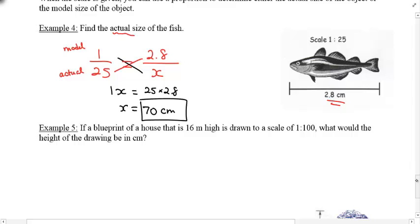All right. Why don't you try the next one here? If the blueprint of a house that is 16 meters high is drawn to a scale of 1 to 100, scale of 1 to 100. Model on the top, actual on the bottom. What would be the height of the drawing? So height of the drawing means I want the height of the model. And what would the actual number be? That's the 16 meters.